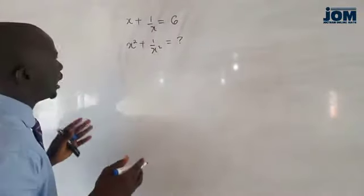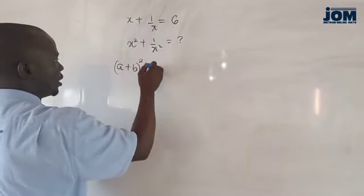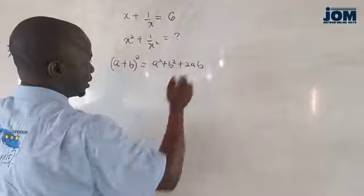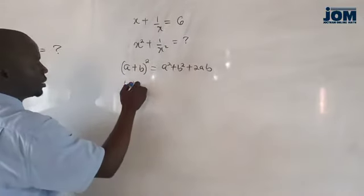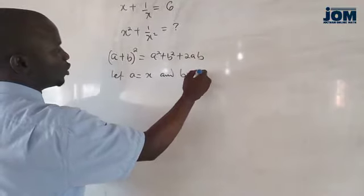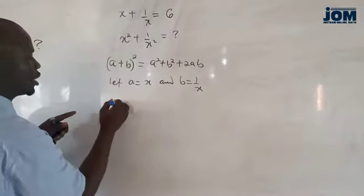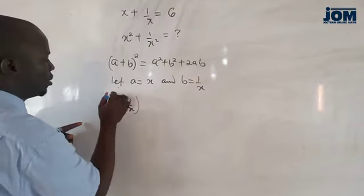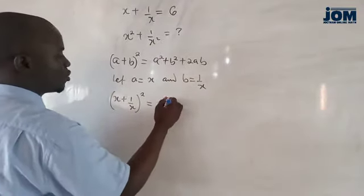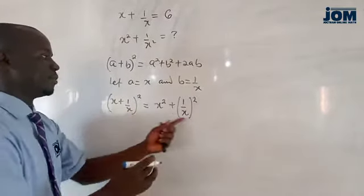In expansion of brackets, we know that a plus b squared is equal to a squared plus b squared plus 2ab. Let a be equal to x and b be equal to 1 over x. Substituting this value, we know that x plus 1 over x all squared is equal to x squared plus 1 over x all squared. That is the value of a and b.